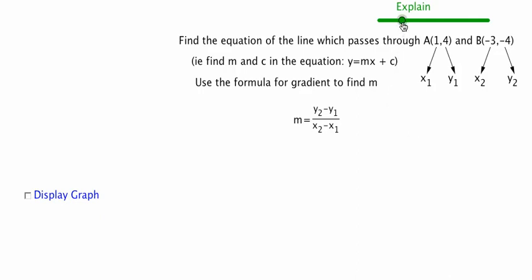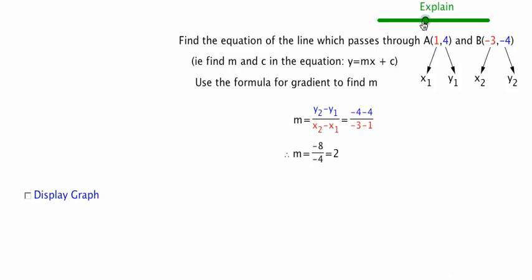If we substitute these in, we're putting y values on top and x values on the bottom, as the colours indicate. So y2 subtract y1 is negative 4 subtract 4, which gives negative 8 over negative 4. Dividing the two negatives we get positive 2. So that's the gradient — we've found m.